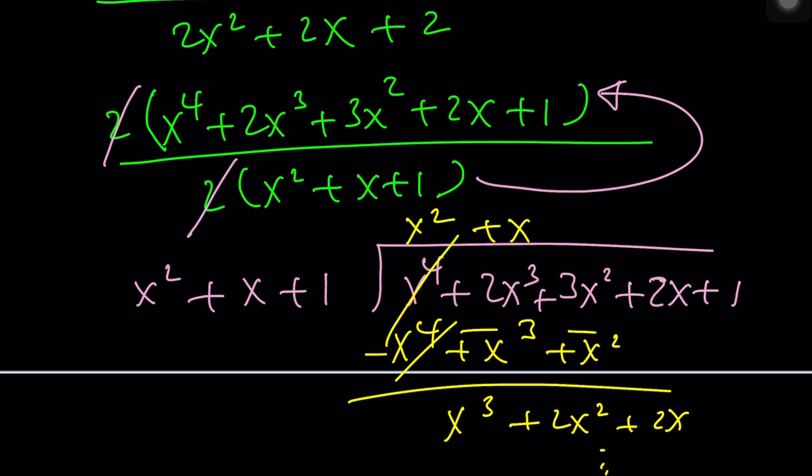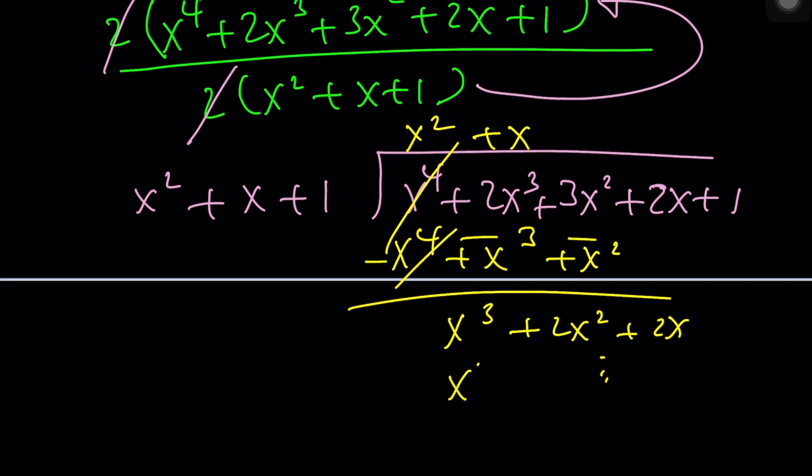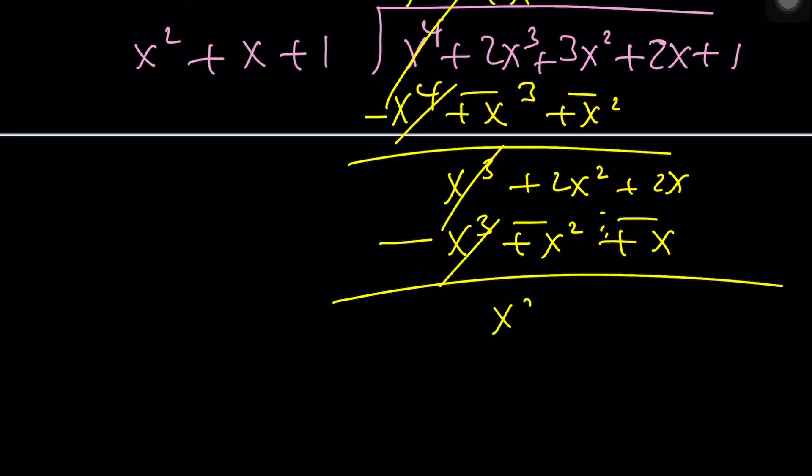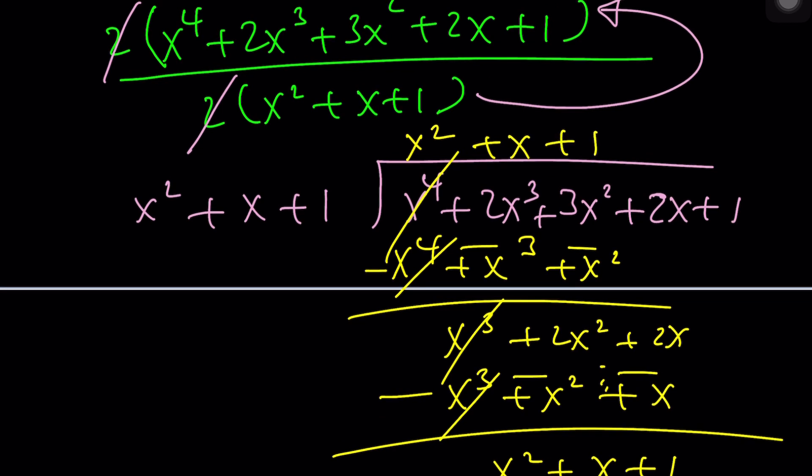x cubed plus x squared plus x. Now we're going to go ahead and subtract again. That's going to give me x squared plus x, and bring down the 1. Uh oh, that was easy! Uh oh, we got the same thing. What does that mean?